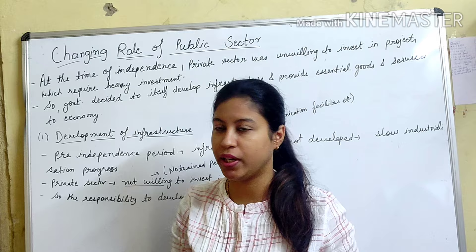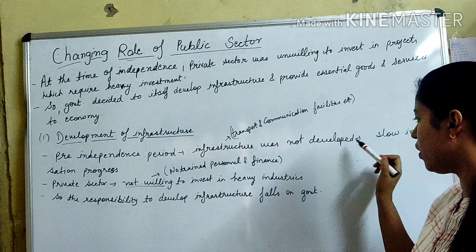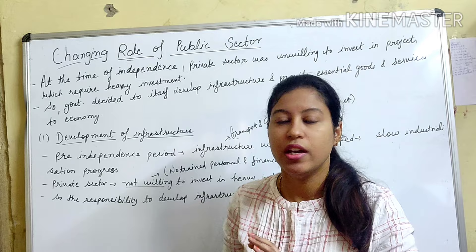In the pre-independence period, infrastructure was not developed. Things like transport and communication facilities, power, etc. were all lacking. This led to slow industrialization progress, because without infrastructure it was very difficult for industries to function.